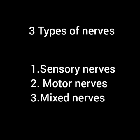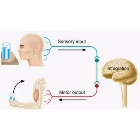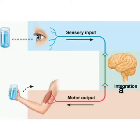Nerves transmit messages from body parts to brain and from brain to body parts. Nerves are of three types: sensory nerves, motor nerves, or mixed nerves. Sensory nerves carry signals from sense organs to the brain. In the photo, you can see our eyes seeing a glass of water, and this information is taken to the brain.